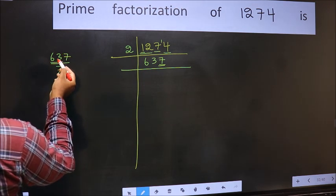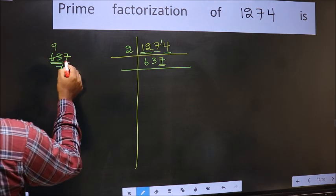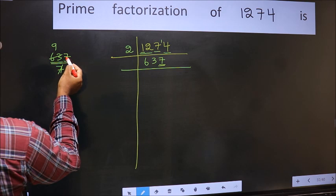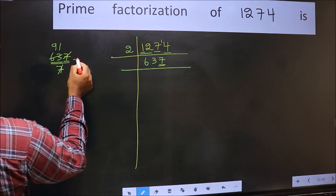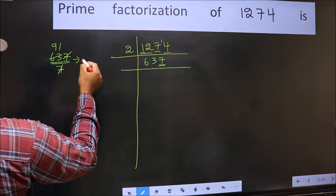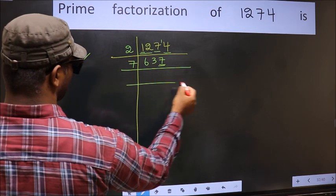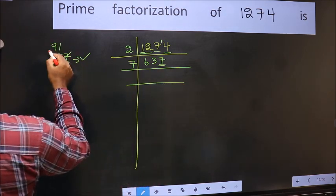When do we get 63 in the 7 table? 7, 9 is 63. The other number 7. When do we get 7 in the 7 table? 7, 1 is 7. No number has been left out. Therefore this is divisible by 7. So take 7 here. And here we write 91.